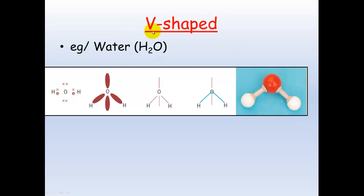Lastly, v-shaped, which I showed you as the original example. Water: again, oxygen has two lone pairs of electrons which are important in establishing the shape. However, we only look at the bonding pairs of electrons with the atoms attached when we look at the final shape.